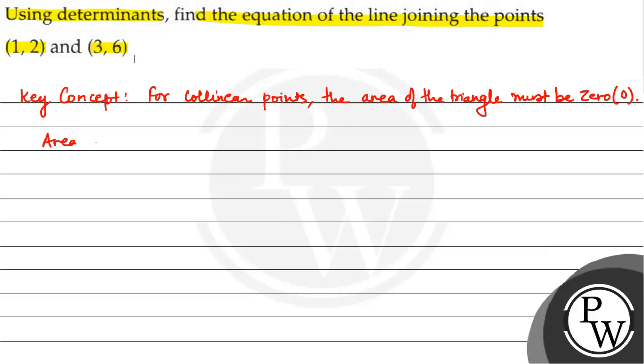The area of triangle is given by half the determinant of the matrix: x1, y1, 1; x2, y2, 1; and x3, y3, 1.